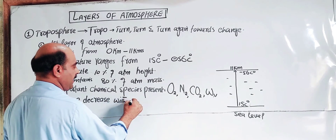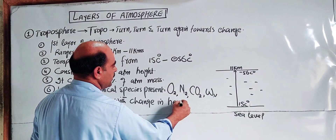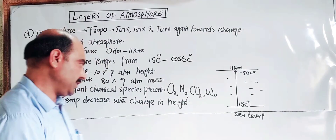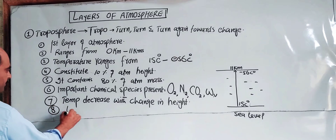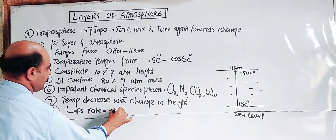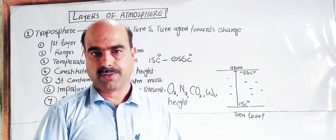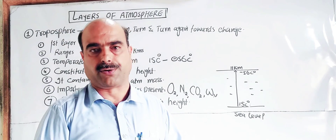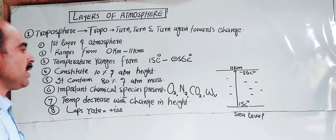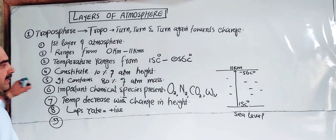With change in height, temperature decreases in the troposphere — the lapse rate is positive. A positive lapse rate means temperature falls with increasing altitude. A negative lapse rate would mean temperature increases with height, but here in the troposphere the lapse rate is positive.